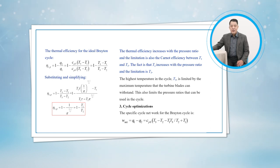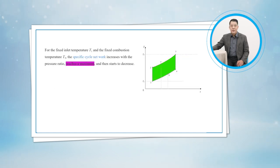By definition, the cyclic-specific network for the Brayton cycle is. For the fixed unit temperature T1 and the fixed combustion temperature T3, we find that the cyclic-specific network increases with the pressure ratio, reaches a maximum, and then starts to decrease.